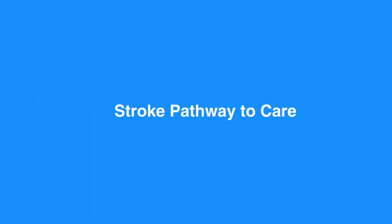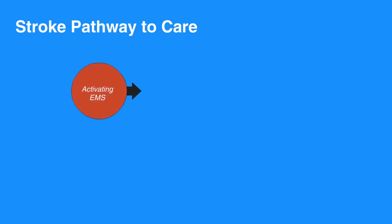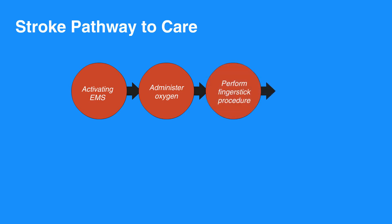To care for an individual with a stroke, proceed with this pathway. Start with activating EMS. Administer oxygen — use 100% oxygen initially and titrate as needed. Perform a finger stick procedure to check glucose, as hypoglycemia can mimic acute stroke. Check history and determine the precise time of symptom onset from the individual and witnesses. Examine the individual to determine deficits such as gross motor, gross sensory, and cranial nerves.